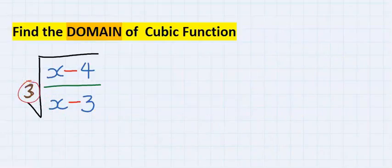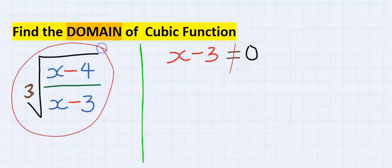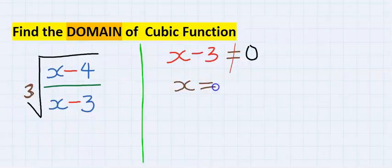Solving for the denominator, the expression must not be equal to zero if this function must continue. Hence, x must not be equal to three. Whenever we have three here, we are going to have three minus three, which is zero.